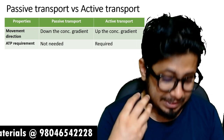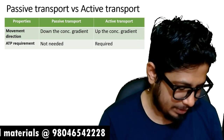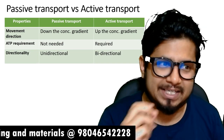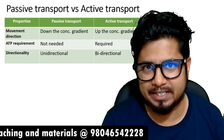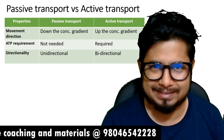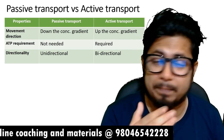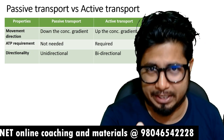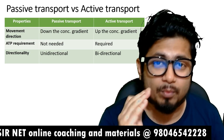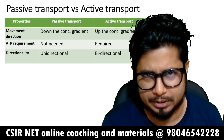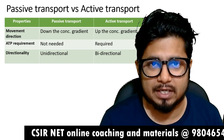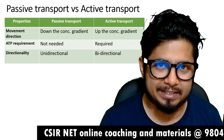The third thing is regarding directionality of movement. The direction of passive transport is unidirectional, that is in one single direction, while active transport can be bi-directional.